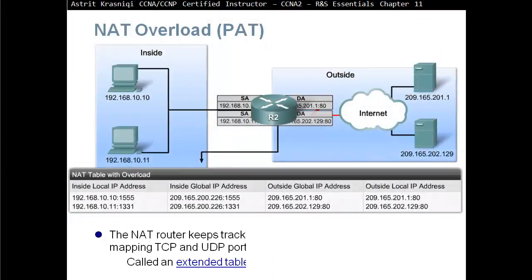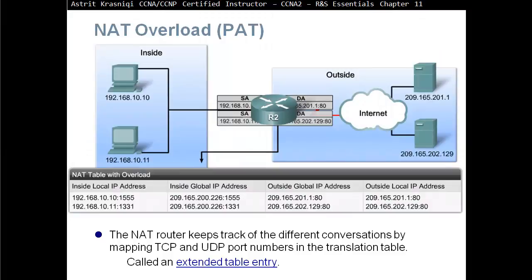With NAT overload, or PAT, the NAT router keeps track of different conversations by mapping TCP and UDP port numbers in the translation table — this is called an extended table entry. For example, from inside local address 192.168.10.10 and 192.168.10.11, both can be translated to the same inside global IP address. This is not possible with static NAT or dynamic NAT — they cannot translate to the same public IP address. With PAT it is possible because both the IP address and port numbers are translated.